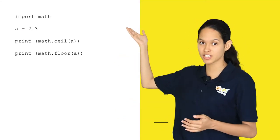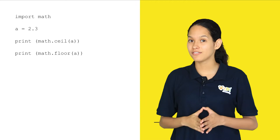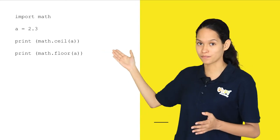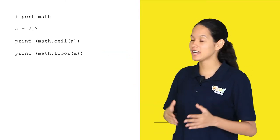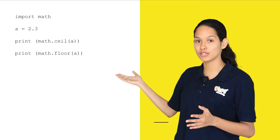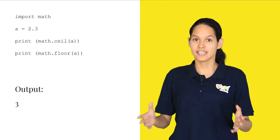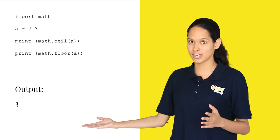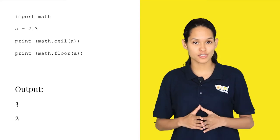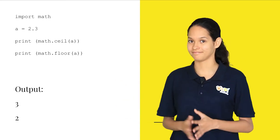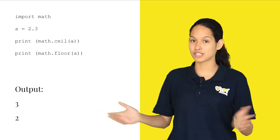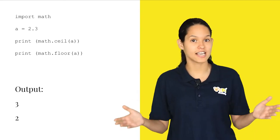In this example, you are importing the math function and you are assigning the value of a to 2.3. Here, we are finding the ceil value and floor value of the variable a. The ceil function returns the value 3 and the floor function returns the value 2. You can change the value of a to any other decimal number and see how it works.